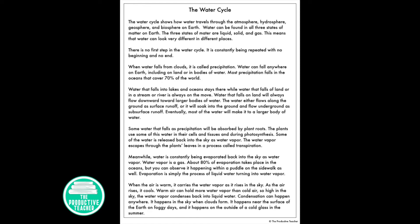The water cycle shows how water travels through the atmosphere, hydrosphere, geosphere, and biosphere on Earth. Water can be found in all three states of matter on Earth. The three states of matter are liquid, solid, and gas. This means that water can look very different in different places.